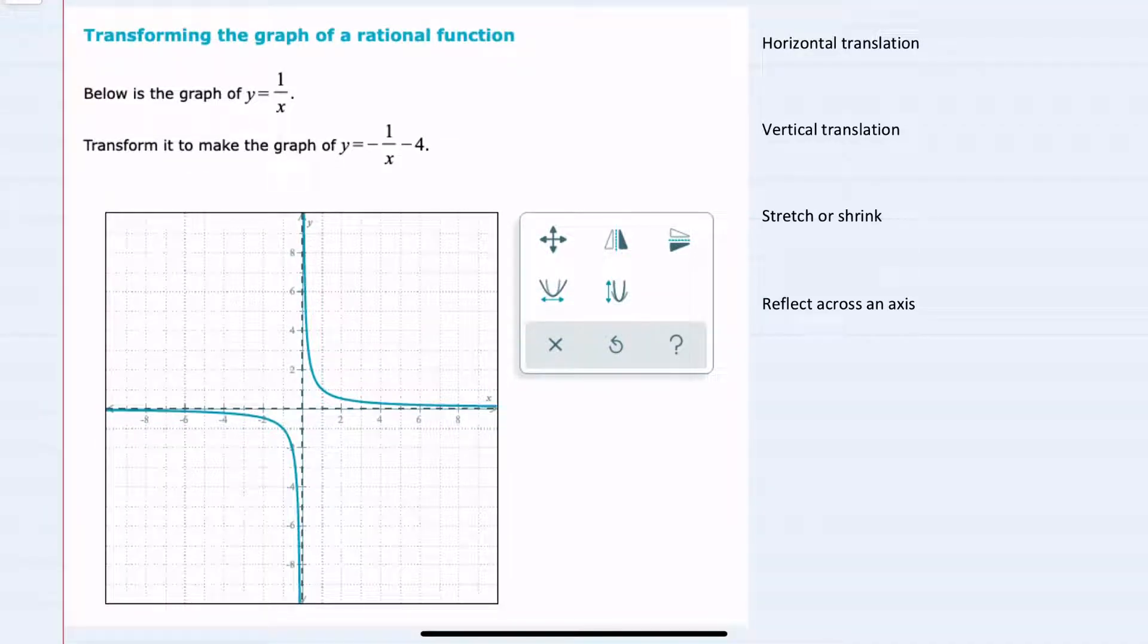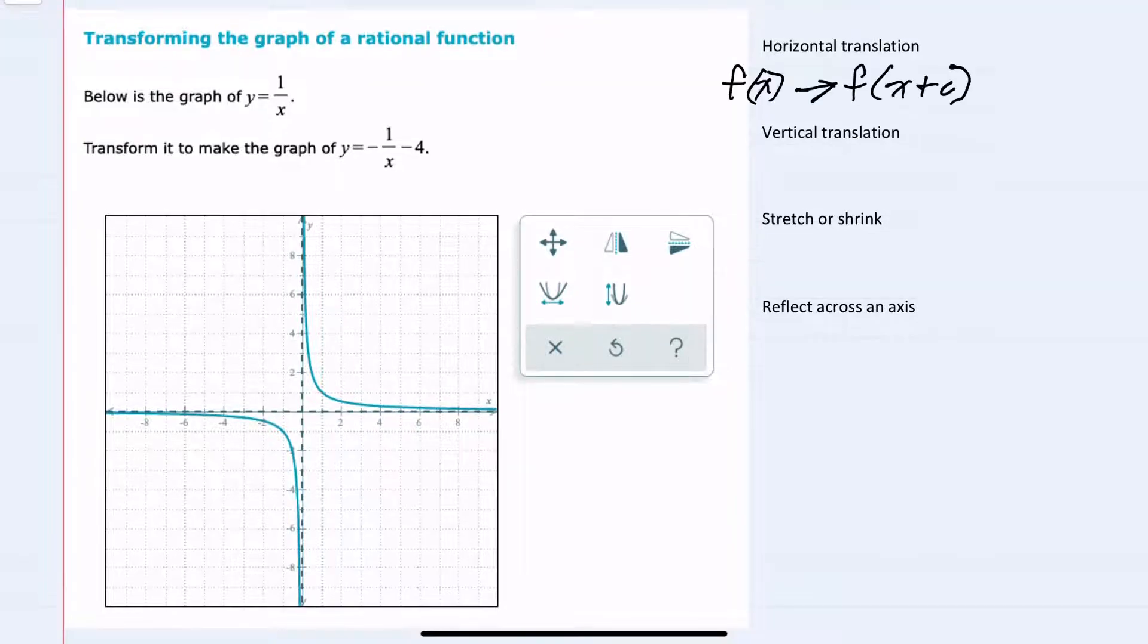So when it comes to our translations, we could have a horizontal translation, and that would be where we're replacing the x with x plus a constant. That would shift things either left or right. We could have a vertical translation, where we're adding or subtracting a constant to the end of a function. That would shift things up and down.